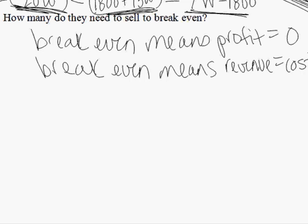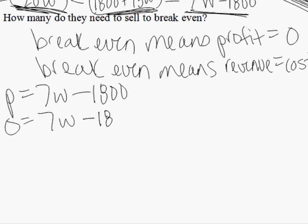So, to figure this out, we would have the profit equation. And we're saying breaking even occurs when profit is zero. So, I replace P with zero. And then I solve for W to find out the number of widgets they need to sell to break even.